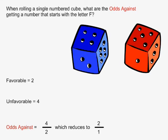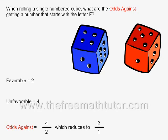In this example, when rolling a single numbered cube, or die, what are the odds against getting a number that starts with the letter F? There are only two sides of the die that have a number starting with the letter F, that is the 4 and the 5.